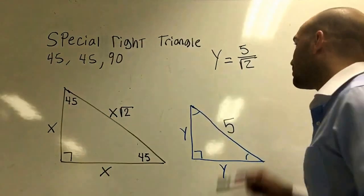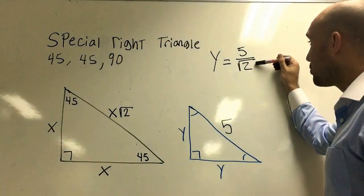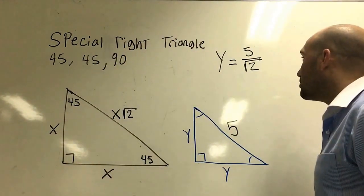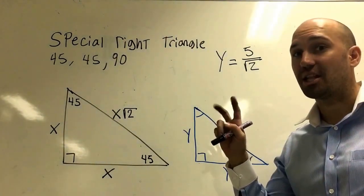Okay, the problem with the square root 2 is we can't have a square root in the denominator. So what we're going to have to do is we're going to have to rationalize the denominator.